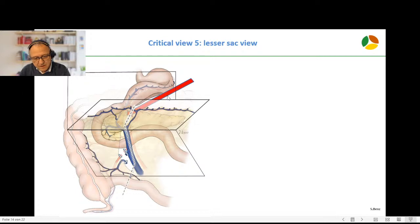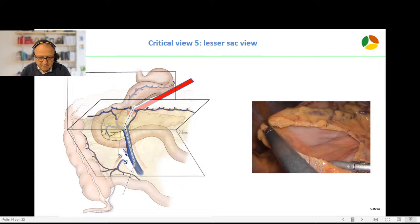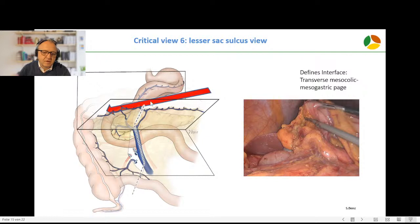Following the rule that you have to open the book before you tackle the vessels, we now first have to open the book between the stomach and mesocolon. We go through the gastrocolic ligament, look for the dorsal aspect of the stomach, which is critical view number five. Then we further open the gastrocolic ligament in a medial to lateral fashion, heading for the hepatic flexure, and divide the hepatic colic ligament. We reach the lesser sac sulcus view. These are the vessels in between: the right gastroepiploic vein, the Henle trunk, superior right colic vein, and the right colic vein.